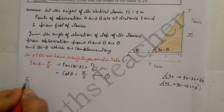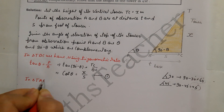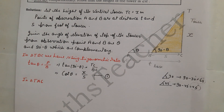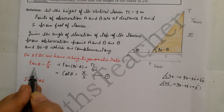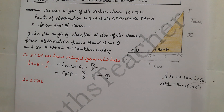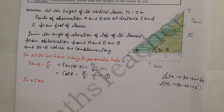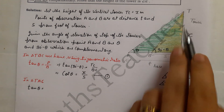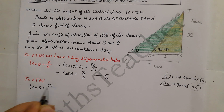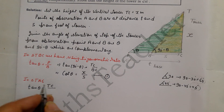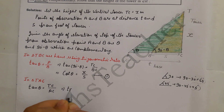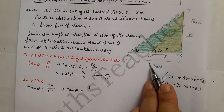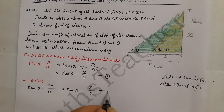In triangle TAC, using trigonometric ratios again, the angle is theta. tan theta equals perpendicular upon base, so tan theta = TC/AC = x/t. This is our second equation.